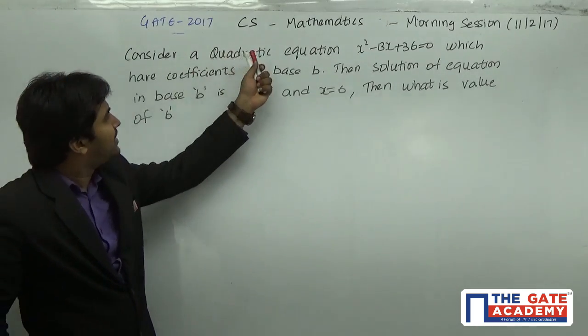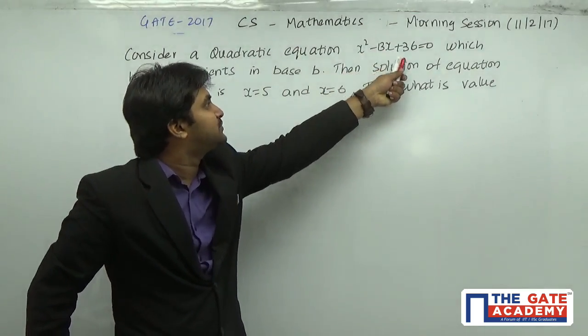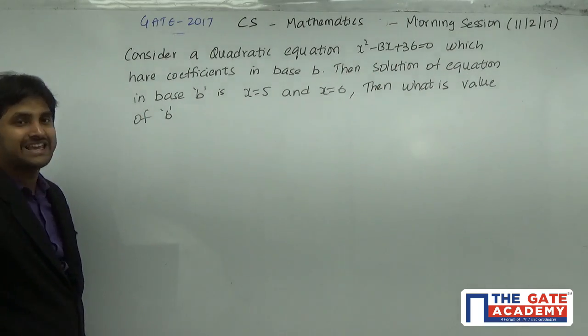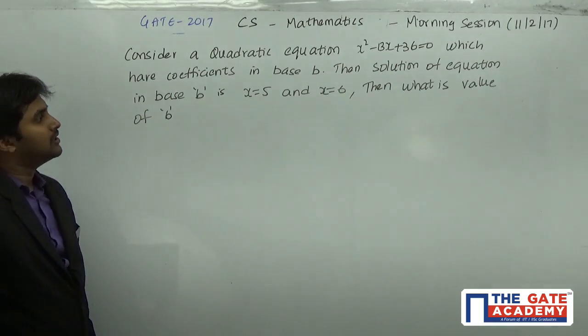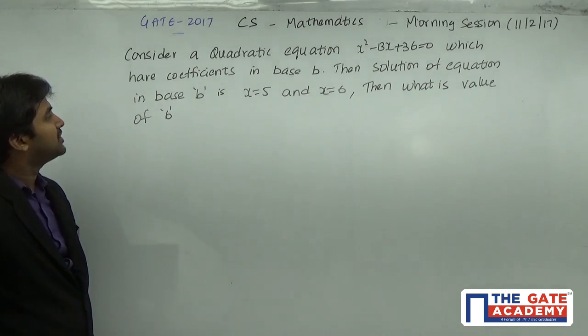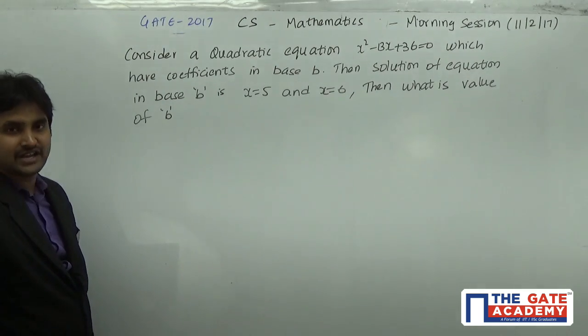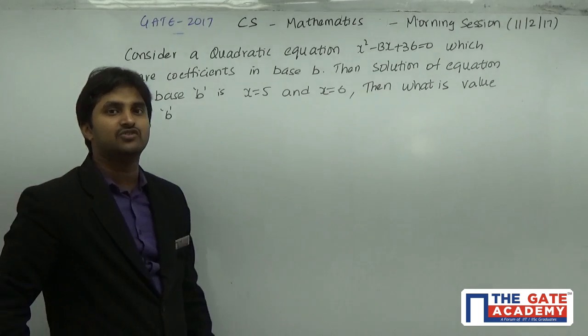Consider a quadratic equation x² - 13x + 36 = 0 which has coefficients in base B. The solution of the equation in base B is x = 5 and x = 6. Then what is the value of B?